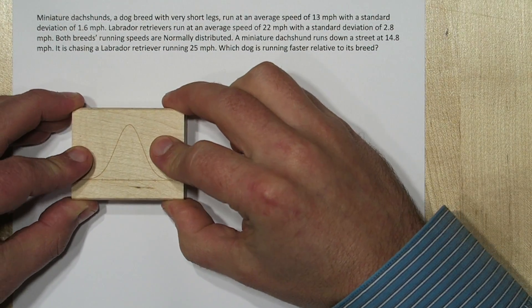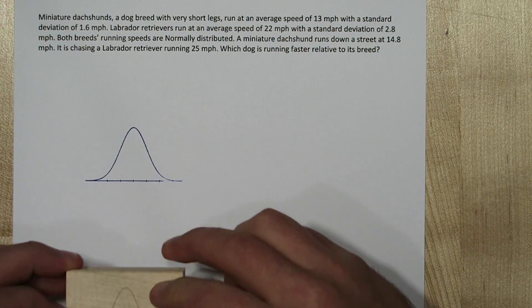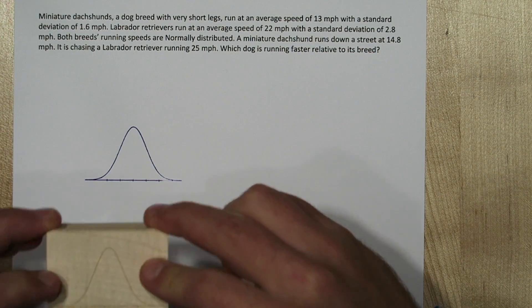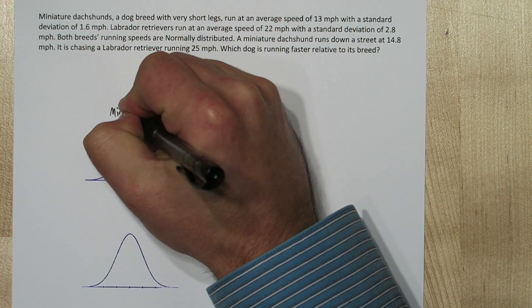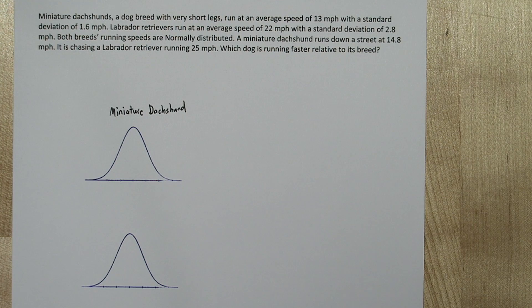Since both breeds' running speeds are normally distributed, let's start by drawing two normal distributions. So let's label each of their means and a couple standard deviations.